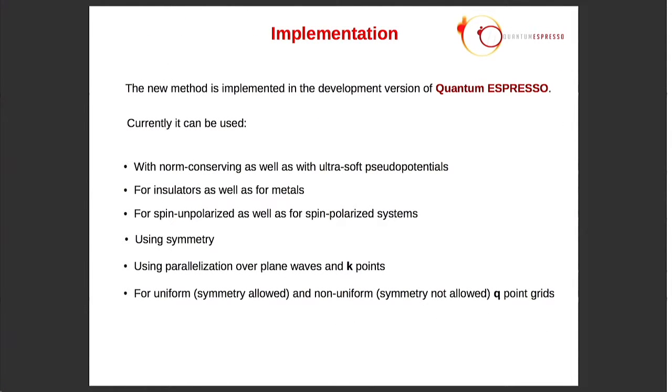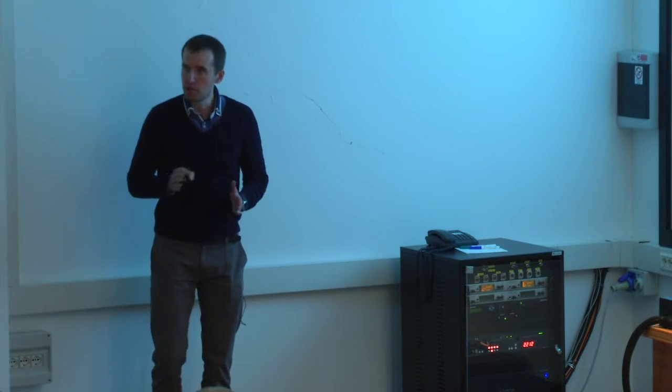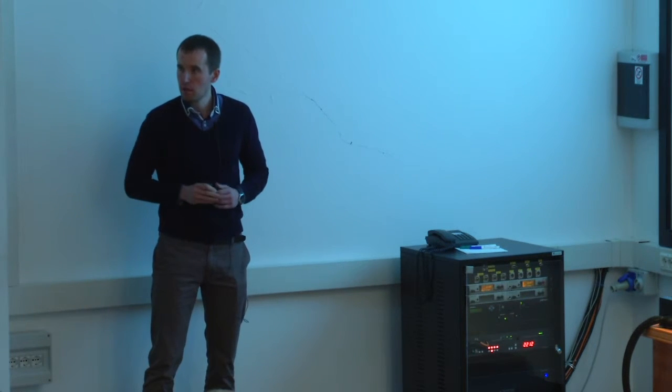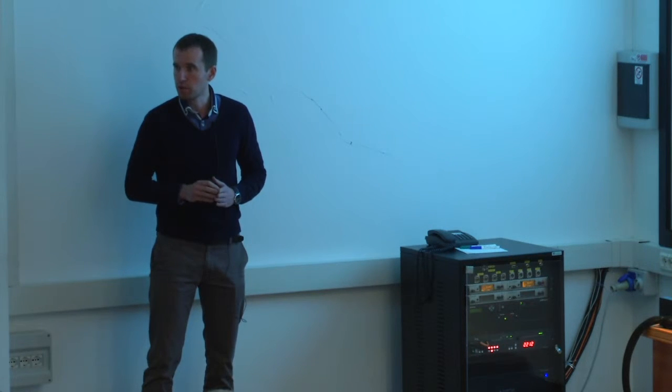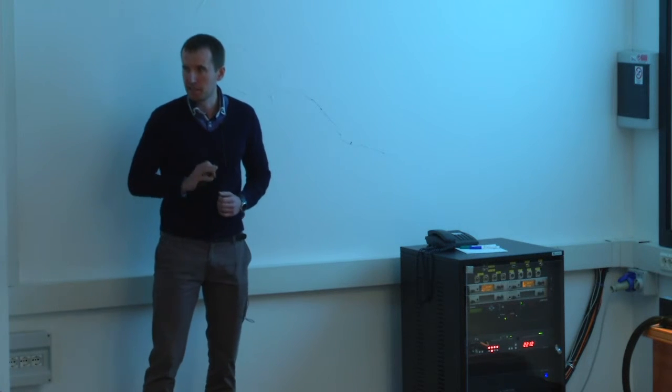So this method we implemented in the development version of Quantum ESPRESSO. It's still private. We're still testing it and finishing the implementation. So far we managed to arrive at the point where the code works with norm conserving and ultrasoft pseudopotentials for insulators and metals, spin unpolarized and spin polarized case. We can also use symmetry. It was quite tricky. Then we can use the parallelization over plane waves and k points, and we can use the uniform q point grids using symmetry and non-uniform grid without symmetry because it's also in phonon it's disabled. If one wants to use q grid which is not uniform, the code gives you a warning that the q2r code will not work, but in principle you can try to do the calculation, but it's an issue probably.